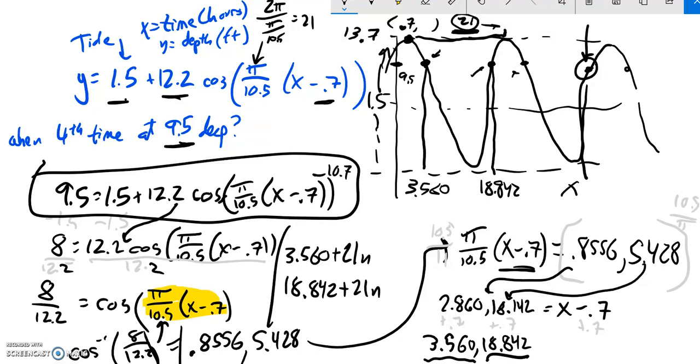And now if I want this fourth one right here, notice this associates with going uphill and hitting that. And that doesn't happen here. That actually happens here, right? That's the first time it happens, going uphill to hit that point. So that's in my 18.842. And notice to get up to that next one, the fourth time it happens, that's a distance of 21.